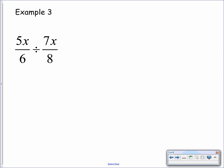Okay, example number three. We're now onto division. So we have 5x over 6 divided by 7x over 8. So remember for division, we first of all need to flip the second fraction and change the division to a multiplication. So this becomes 5x over 6 multiplied by 8 over 7x.